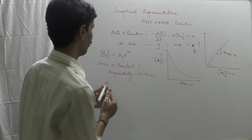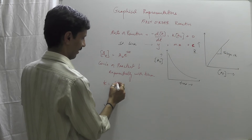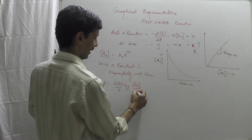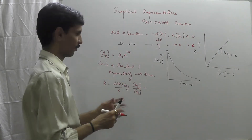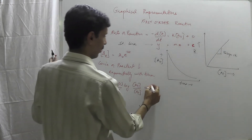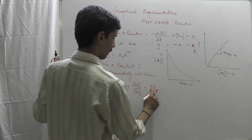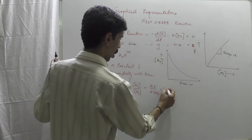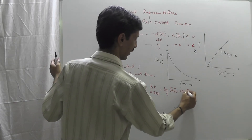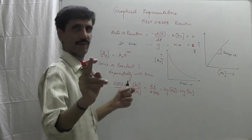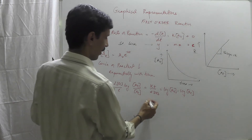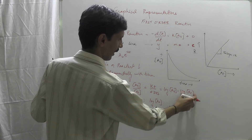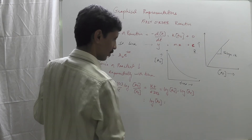Next case: the integrated rate equation says K is equal to 2.303 upon T into log of A0 upon [A]t. If we rearrange this, we get KT upon 2.303 equals log of A0 minus log of [A]t, since log(A/B) equals log A minus log B. Therefore, log of [A]t equals minus KT upon 2.303 plus log of A0.